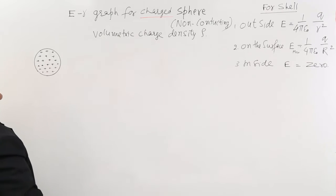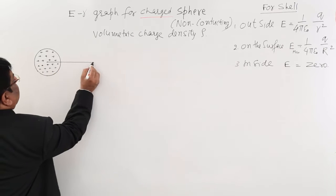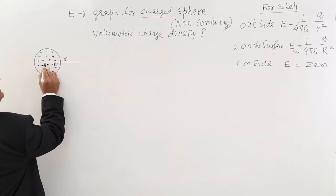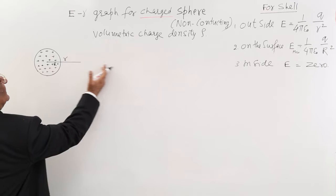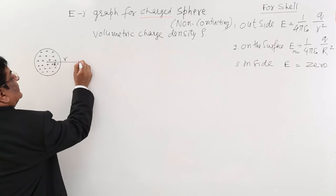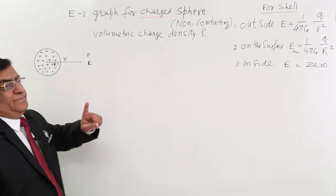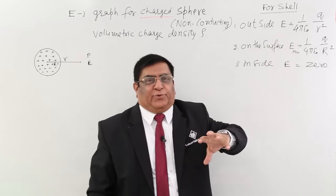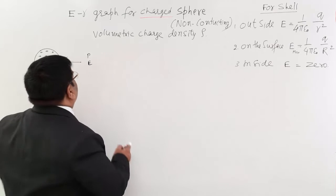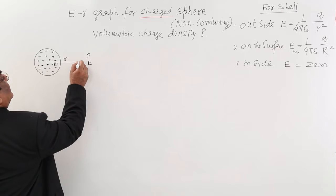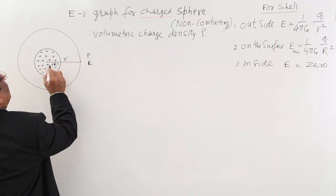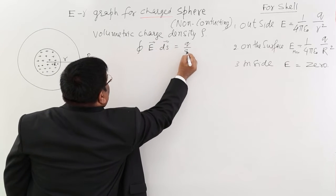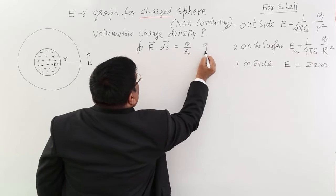Now again we divide into three sections. Let's say this is the center, this is capital R, and here we have outside a point at total distance R. This is a variable distance and this distance we will either increase or decrease to any point. Here is the point P and we want to find out electric field here. Integration E ds is equal to Q upon epsilon 0, the Gauss theorem from which we are going to take help.